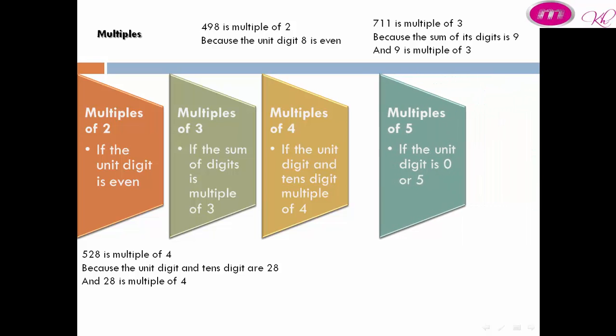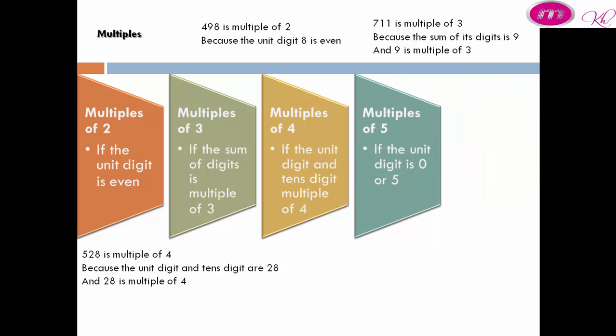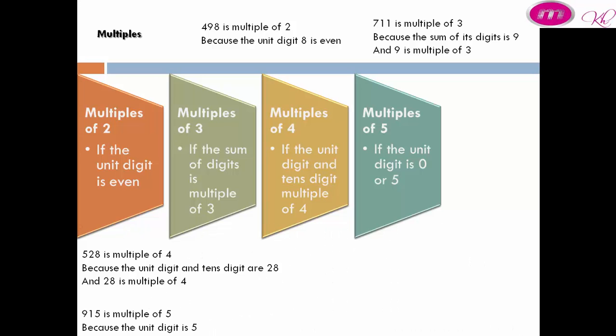Multiple of 5: a number is a multiple of 5 if the unit digit is 0 or 5. For example, 915 is a multiple of 5 because the unit digit is 5.